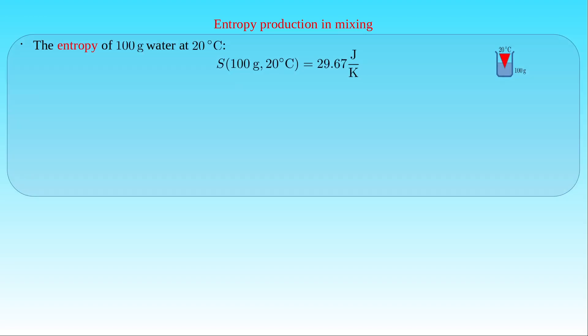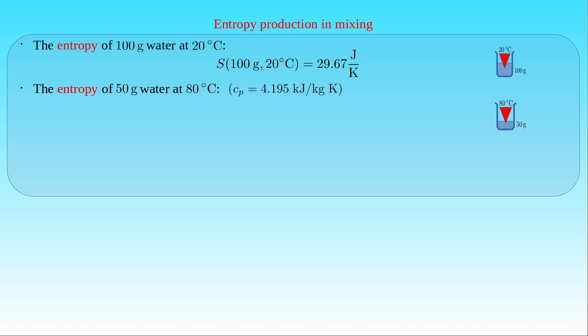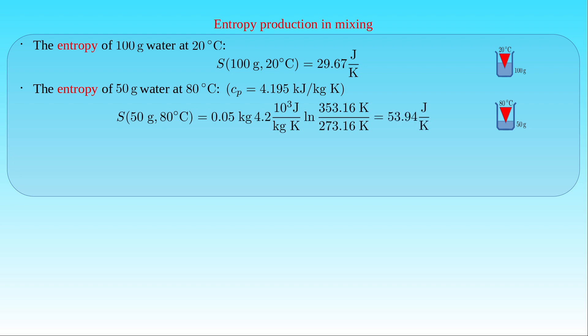Entropy production can also be studied in the case of mixing liquids at different temperatures. We have just determined the entropy S of 100 grams of water at 20°C relative to 0°C, finding it equal to 29.67 J/K. We can compute the entropy S of 50 grams of water at 80°C by applying the same formula. Since the specific heat capacity C_P of water at 80°C is 4.195 kJ/(kg·K), approximating it as 4.2 still gives an accurate result, yielding 53.94 J/K for the same zero point.